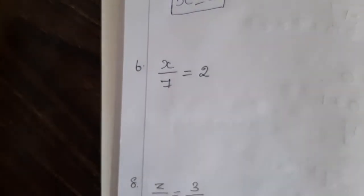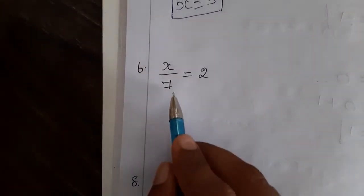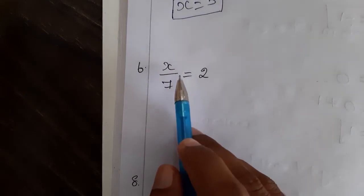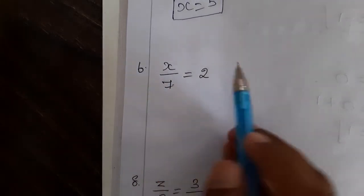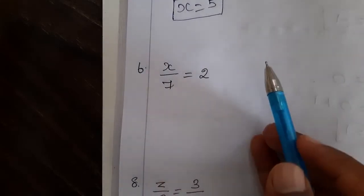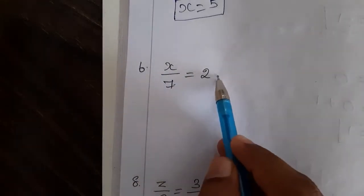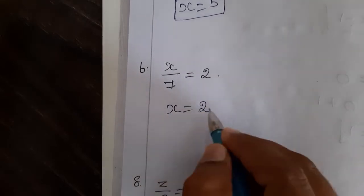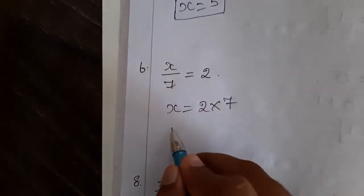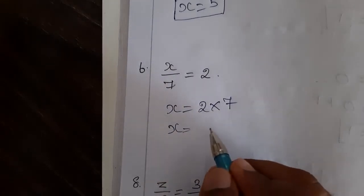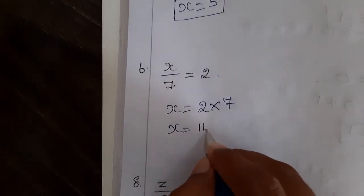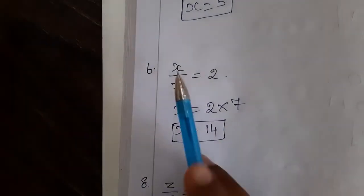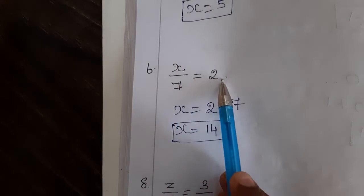Next: x by 7 is equal to 2, that is x divided by 7 is equal to 2. We have to find the value of x, and 7 is divided. If you transpose, the division will become multiplication. So 7 we are transposing to the next side — it will be multiplied. x will remain same, 2 will remain same, and division becomes multiplication. So x is equal to 2 into 7, which is 14. Even if you substitute: 14 by 7 is equal to 2.